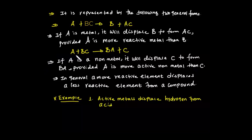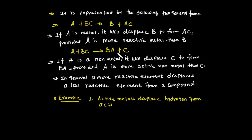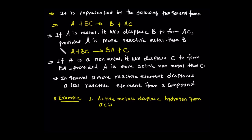So A is a non-metal — more electronegativity reactivity is non-metal. If A is a non-metal, then A's reactivity must be more than B's reactivity. B is the compound and it will have a non-metal, so B is the compound.